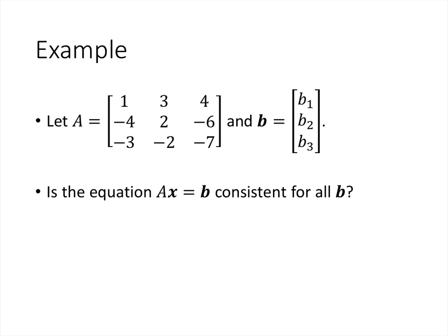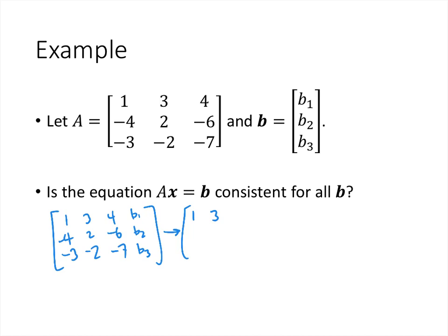Let's work through an example. We have this matrix A and a generic vector b with variables as its entries, and the question is: is the equation Ax = b consistent for all b? We construct the augmented matrix, which has the same columns as A, with the additional column where the b's live, and we row reduce because whether this equation is consistent depends on where the pivots are.